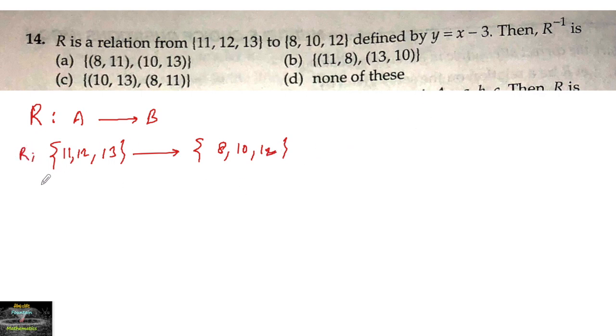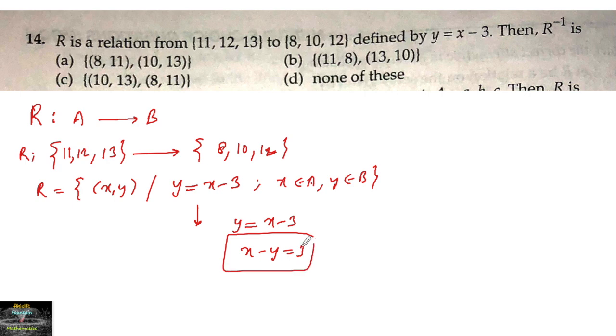It is given R equals some ordered pair such that y equals x minus 3, where x belongs to A and y belongs to B. When y equals x minus 3, that means x is greater than y, or y is less than x. The difference of the ordered pairs, y equals x minus 3 or x minus y equals 3. Since the difference of the elements x and y must be equal to 3.